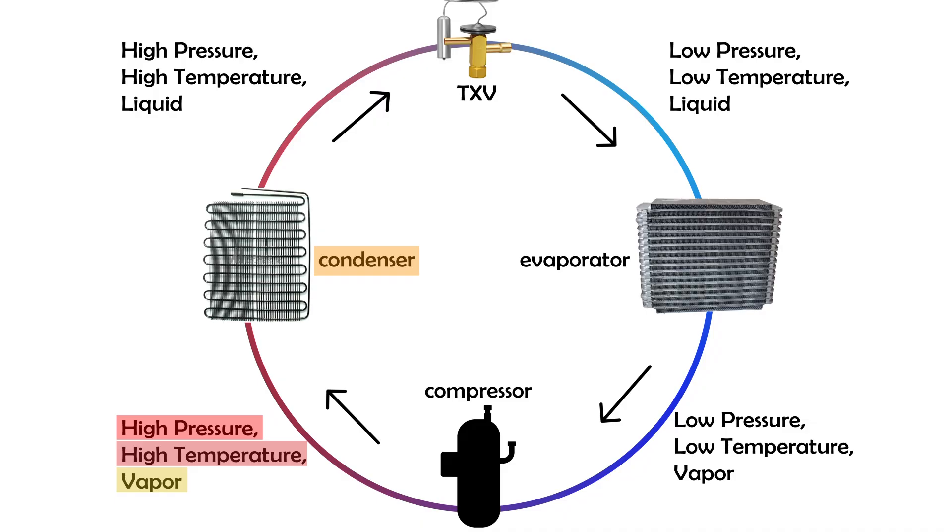This process happens at a constant pressure and is known as the saturated state, where the refrigerant begins to condense. By the time it exits the condenser, the refrigerant is now a high-pressure, high-temperature liquid. This is also why the condenser is usually located outside. It needs access to cooler ambient air to help remove the heat.